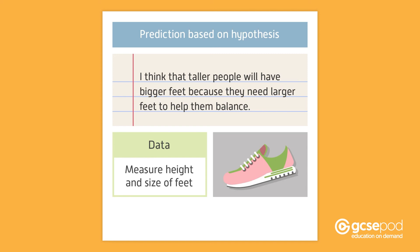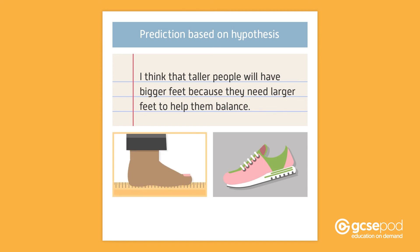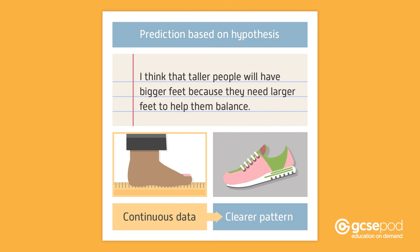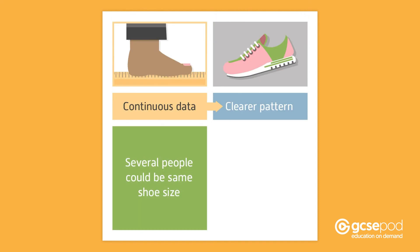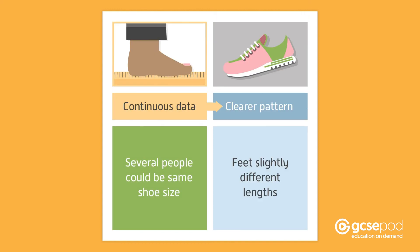You could take their shoe size or measure the length of their feet with a ruler. Measuring length would give you continuous data because foot length could take any value. This would give you a clearer pattern because several people could be the same shoe size, but their feet could be slightly different lengths.